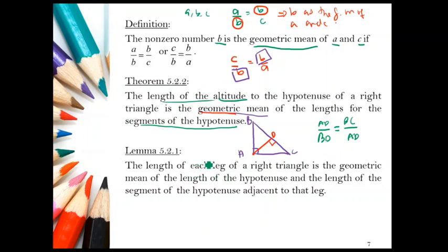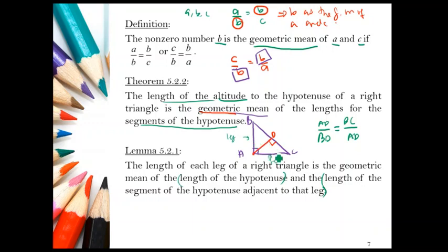Lemma 5.2.1 states that the length of each leg of a right triangle is the geometric mean of the length of the hypotenuse and the length of the segment of the hypotenuse adjacent to that leg. For a right triangle, the longest side is the hypotenuse and the other two sides are called legs.